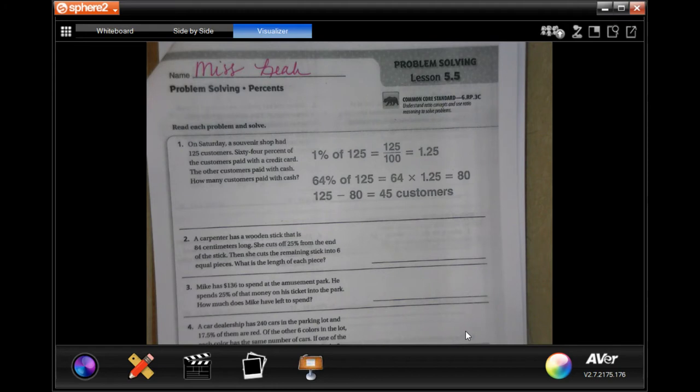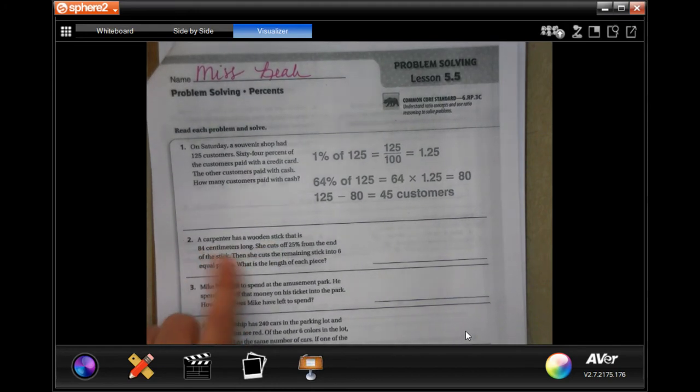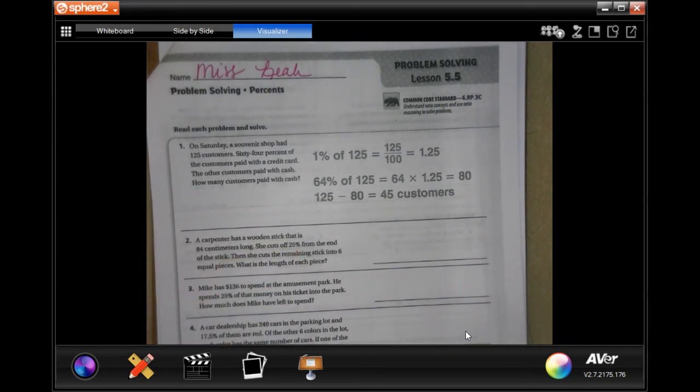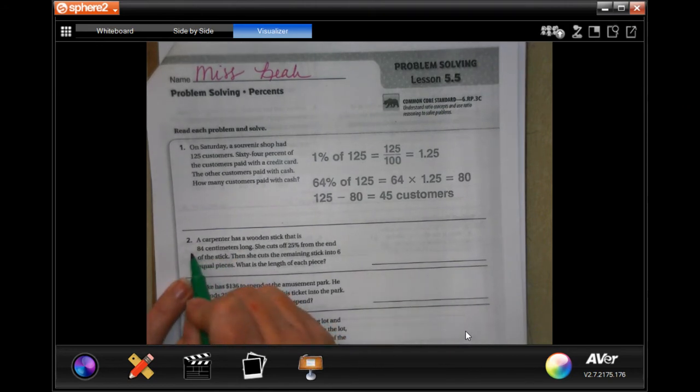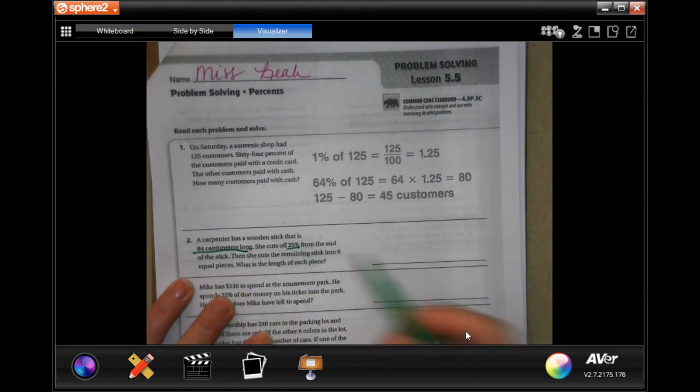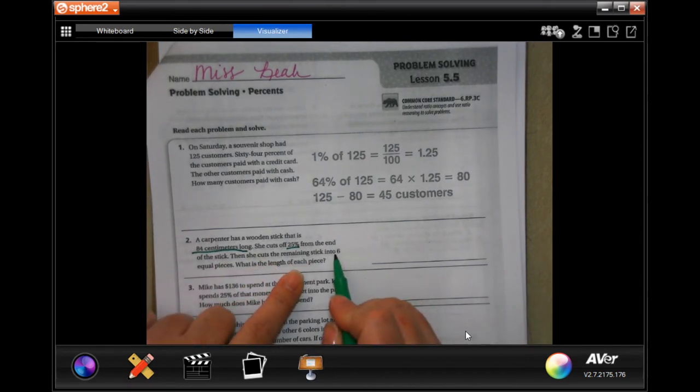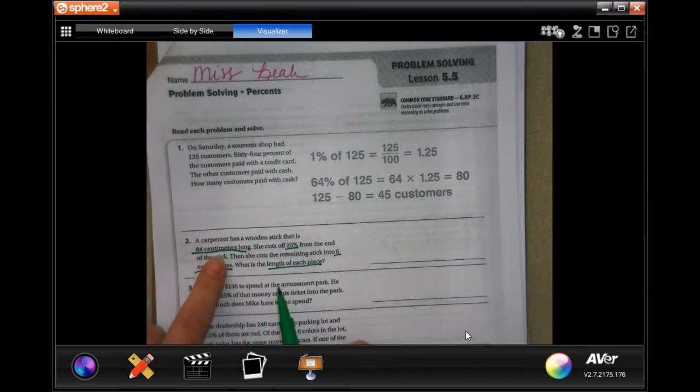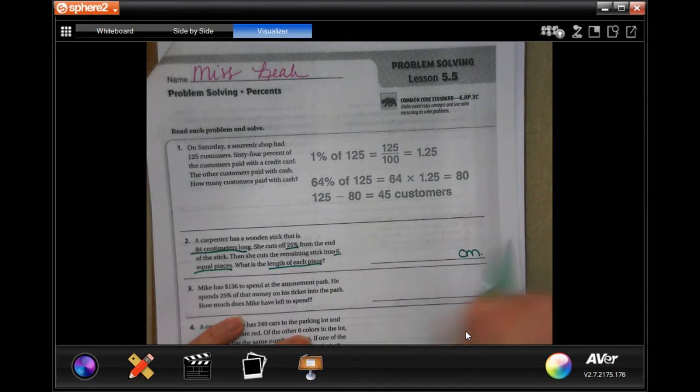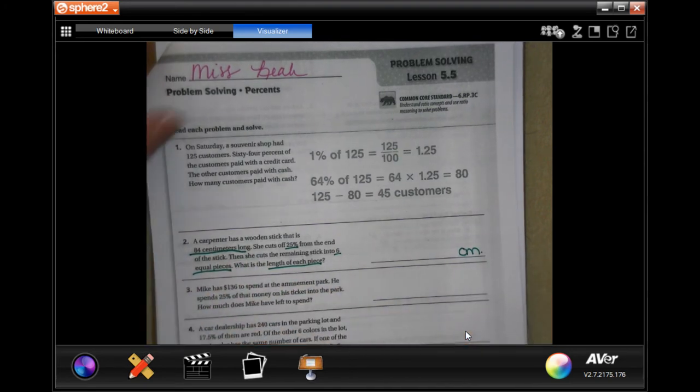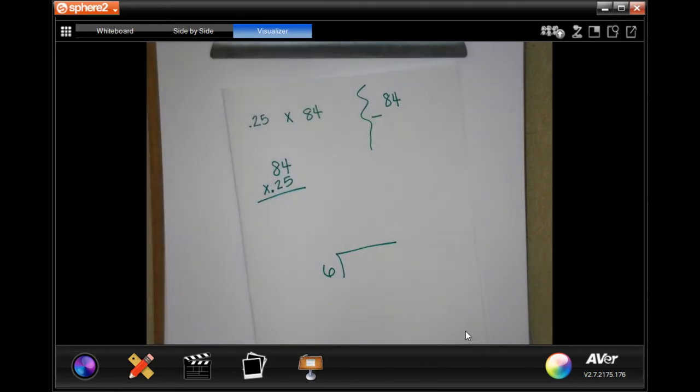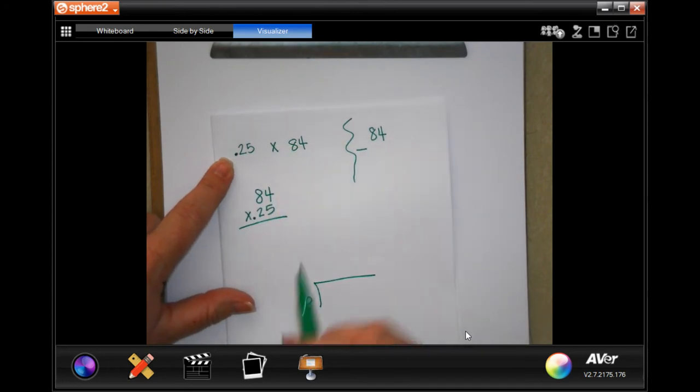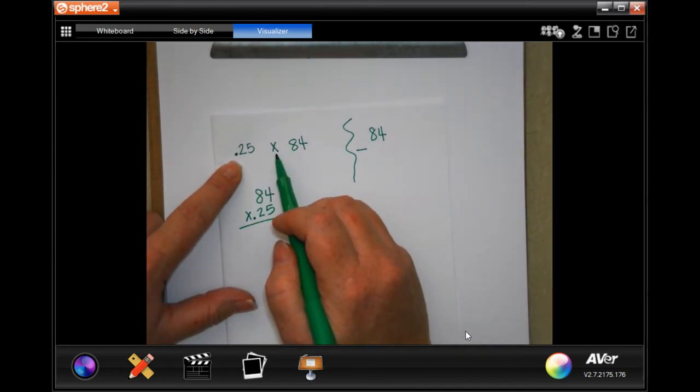So it's a multi-step problem. Each one of these guys are. A carpenter has a wooden stick that is 84 centimeters long. She cuts 25% from the end of the stick. That's your first part. Then she cuts the remaining stick into 6 equal pieces. What's the length of each piece? Whatever it is, it's going to be in centimeters. Let's find out. Multi-step problem. So first, we need 25% of, which is 0.25, of means multiplied, 84.